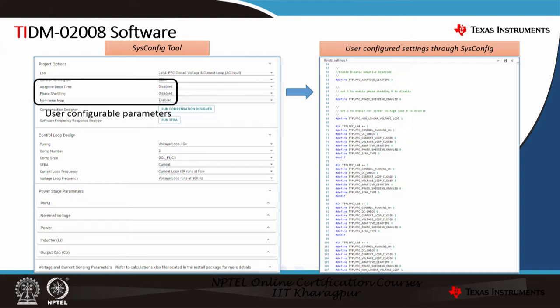As in when you change the adaptive dead time in the GUI from disabled to enabled, correspondingly the macro will automatically change from 0 to 1. The user need not go and update the header file manually. The same applies for other parameters as well. There are many more configurations available within the sysconfig tool. The TTPL PFC underscore settings dot H file cannot be edited by the user — it is solely generated by the sysconfig tool.